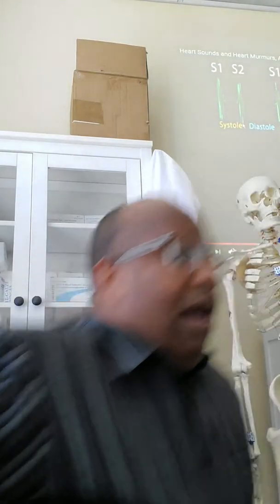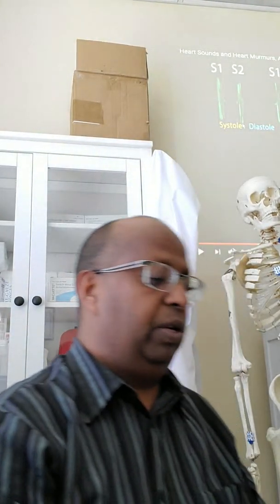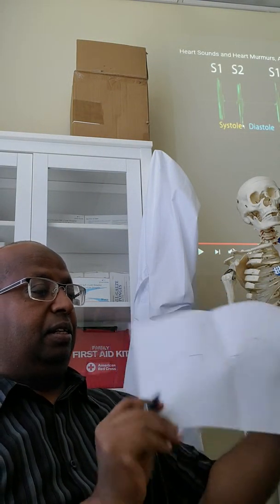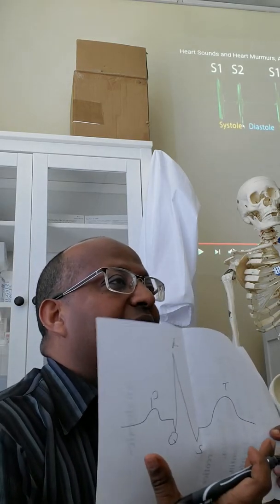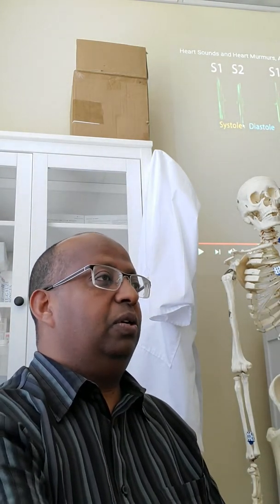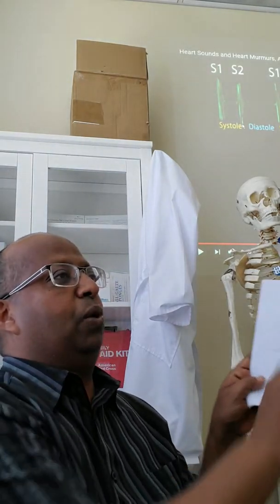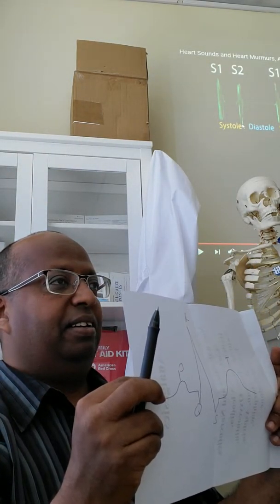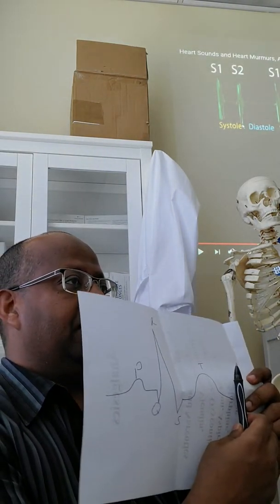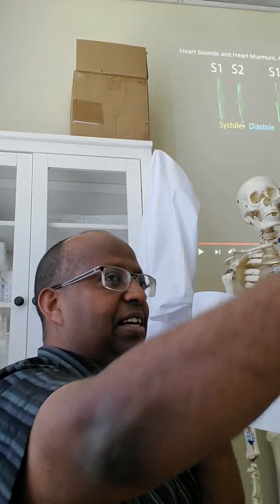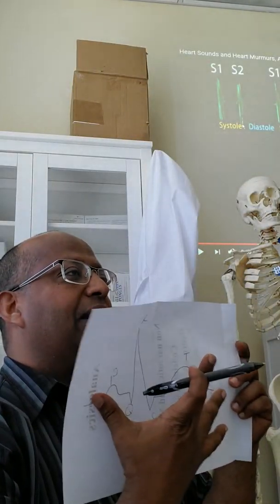When you do an EKG, you will see the waves P, Q, R, S, T — that represents one cardiac cycle. The EKG traces this one cardiac cycle, then when the next one comes, it traces another like this. So this is one cardiac cycle, and before the next cardiac cycle comes, there is a short gap and then the next P will come.